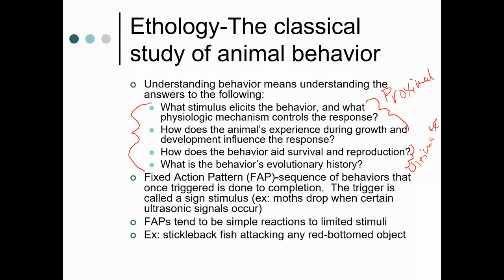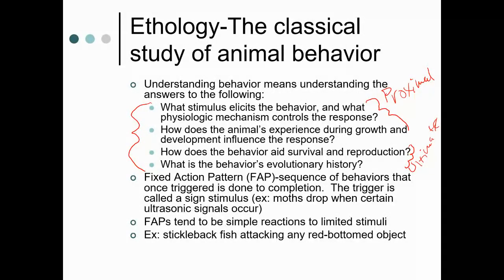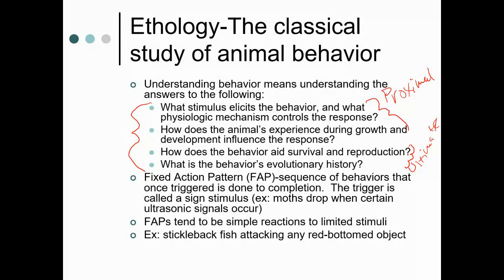The ultimate cause is how the behavior actually evolved in the organism. The proximal cause is what's going on right now; the ultimate cause is the evolutionary background that caused this to evolve in the first place. Ethology assumes there's a genetic component to behavior, because there has to be a genetic component in order for it to evolve through natural selection.